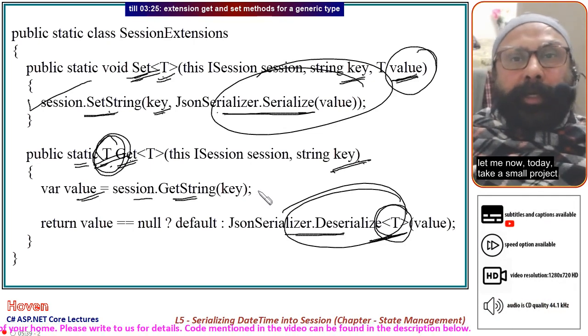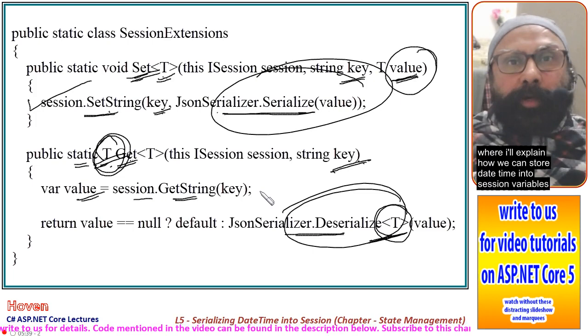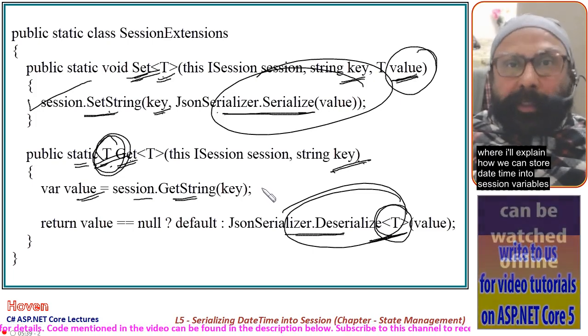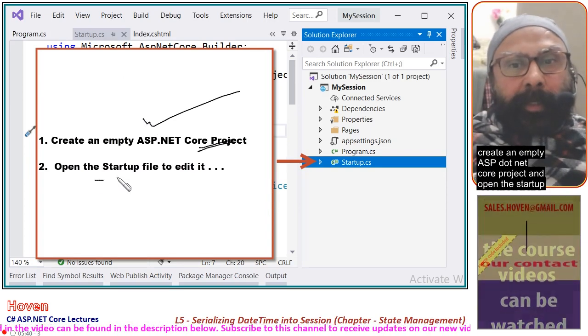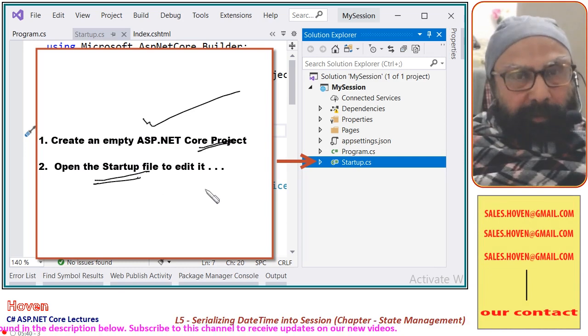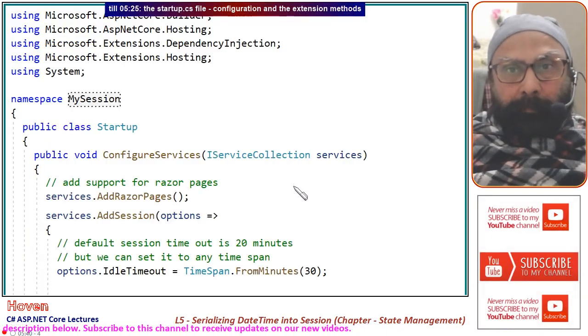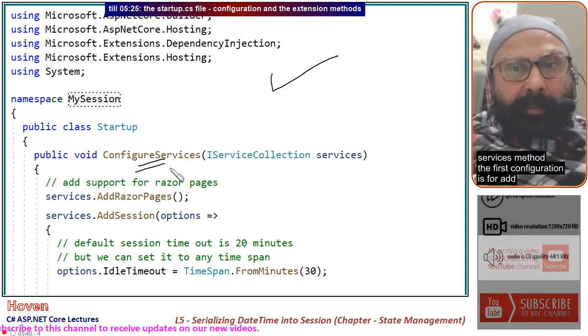Let me now take a small project where I will explain how we can store DateTime into session variable. Create an empty ASP.NET Core project and open the startup file so that we can make some configurations. This is the startup file that opens and this is the ConfigureServices method.